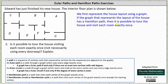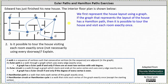Recall that a Hamilton path, or Hamiltonian path, is a walk that visits each vertex of the graph exactly once. So the first step is to place a vertex in each room and then connect the vertices with an edge if the two rooms are adjacent and share a doorway, which gives us the following edges. Now we need to determine if there's a Hamilton path.